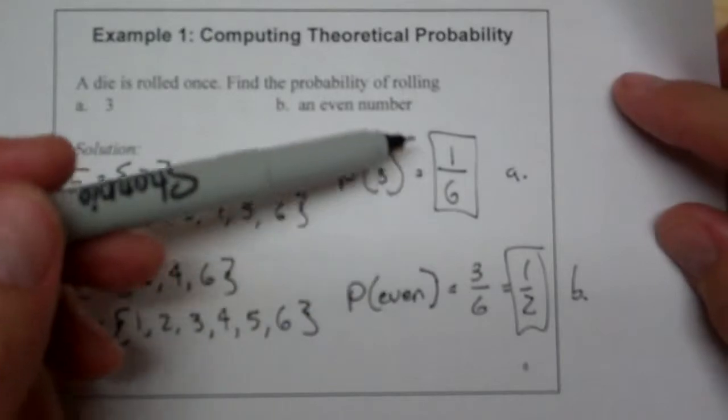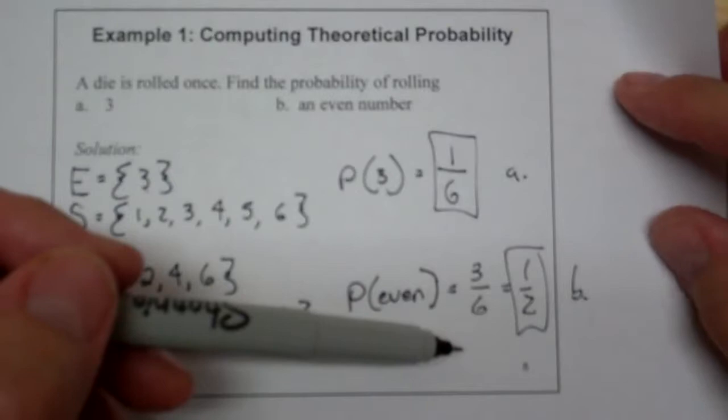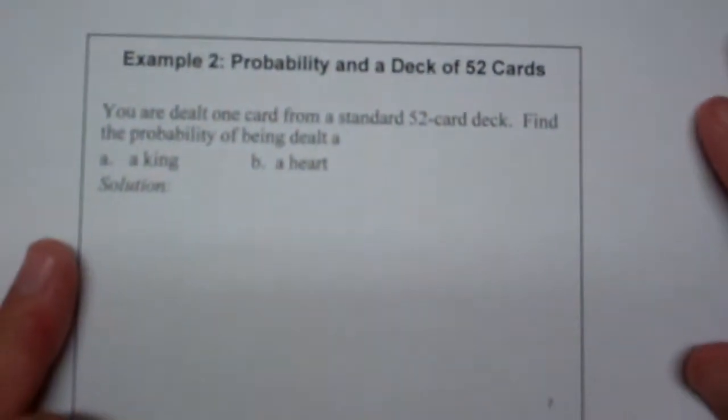So hopefully some of these easier probabilities make sense. The problem is, the harder theoretical probabilities not only are harder to calculate, but sometimes they can be very counterintuitive.